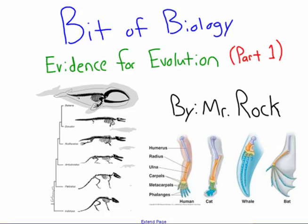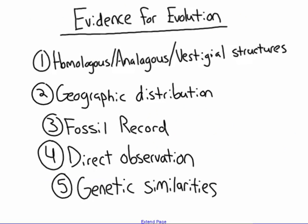As I said previously, evolution is a theory that's 100% true, but in science, theory actually carries a lot of weight because theories are well supported with evidence. In this video I'm going to be talking about two pieces of evidence: number one is homologous, analogous, and vestigial structures, and number two is geographic distribution. I'll be discussing the other three in part two.